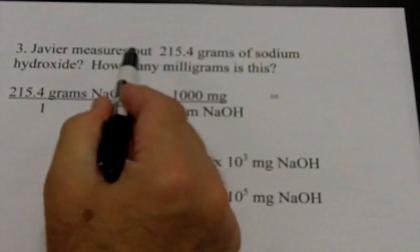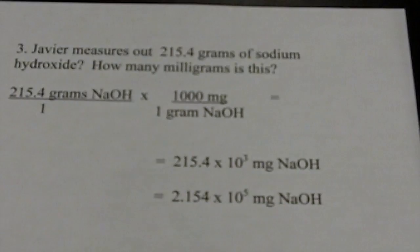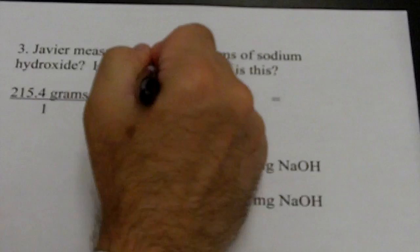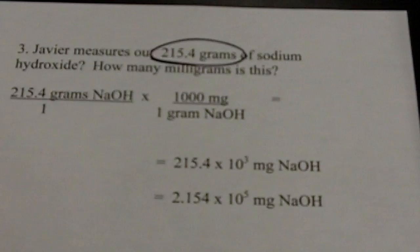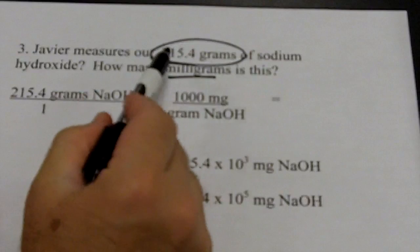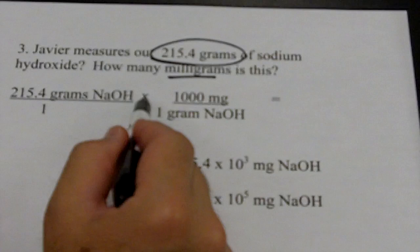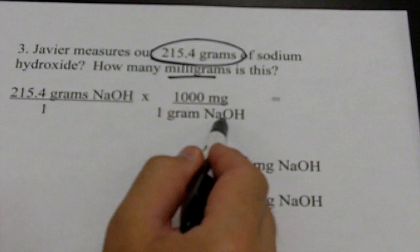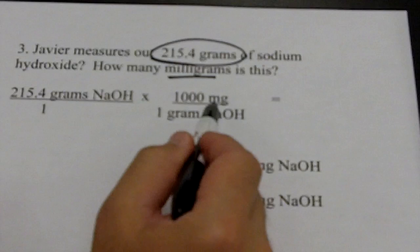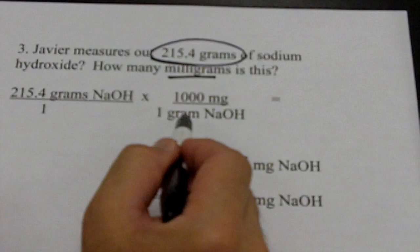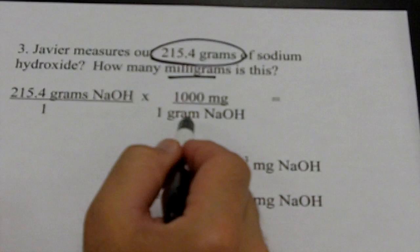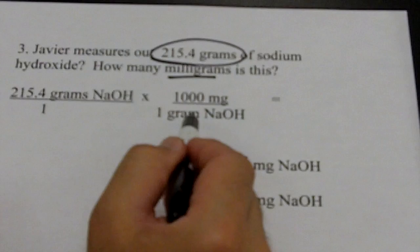This next problem is a little more geared toward chemistry, but it's the same procedure. Javieta measures out 215.4 grams of sodium hydroxide. How many milligrams is this? First thing: look for numbers — circle 215.4 grams. What am I being asked for? Milligrams — underline that. Take what you've circled and write it over one: 215.4 grams of sodium hydroxide over one. Make a multiplication sign. The unit grams goes in the lower right, and milligrams goes on top. Milli means thousand — there are a thousand milligrams in one gram.